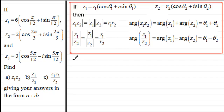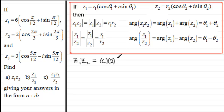For the solution of part a, we need z1 multiplied by z2 in mod-arg form. The modulus of z1 times z2 is given by the product of the individual moduli, so that's 6 times 2. Then we multiply by the cosine of the argument of z1·z2, and the argument of z1·z2 is the sum of the individual arguments.